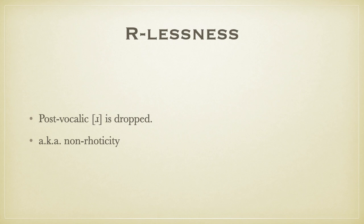The first feature I want to discuss is R-lessness. This refers to the dropping of post-vocalic R — 'vocalic' being an adjective linguists use to refer to vowels, so post-vocalic means it follows a vowel. The R isn't dropped in all contexts, but only when it appears after a vowel. The phenomenon is also known as non-rhoticity. 'Rhotic' means R-ful, so we talk about rhotic and non-rhotic dialects. Standard American English is rhotic, while Standard British English is non-rhotic. The root 'rho' is the Greek word for R.